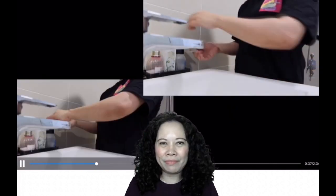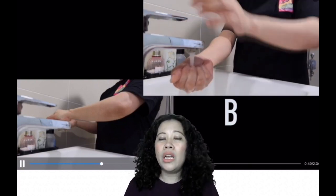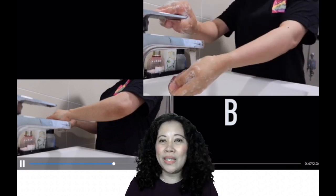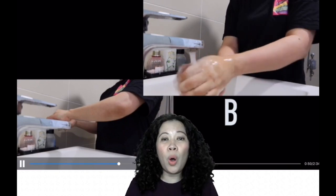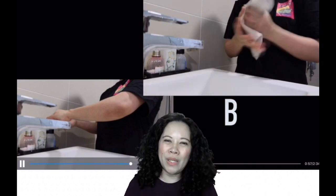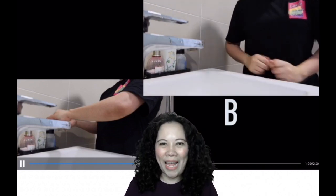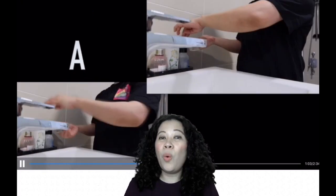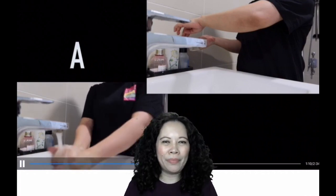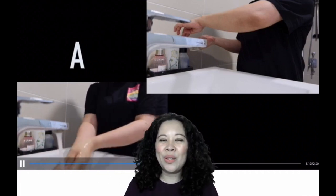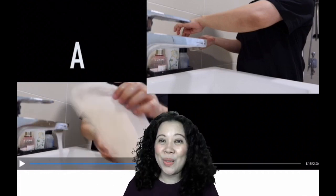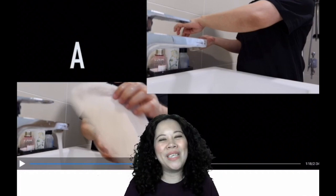Another scenario: Person B is washing her hands with soap and while washing, she closes the tap, only opening it when she needs to wash off the soap, and uses a towel instead of paper towel or tissue to dry her hands. While Person A, as she is washing her hands with soap, she did not close the tap. Person B did the right thing.